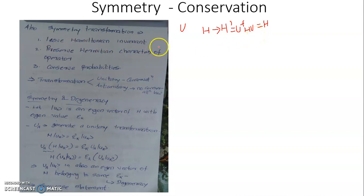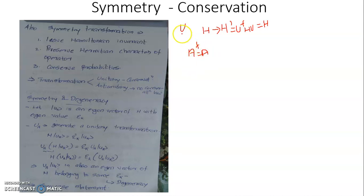Besides leaving the Hamiltonian invariant, the symmetry transformation preserves the Hermitian characteristics of an operator. Suppose A is a Hermitian operator such that A dagger equals A — the mathematical requirement for an operator to be Hermitian. If U is a unitary operator accounting for a unitary transformation of A, then A changes to A prime given by A prime equal to U A U dagger equal to U dagger A U.